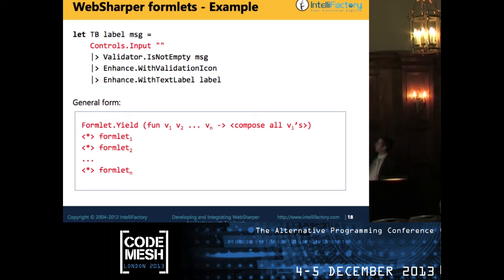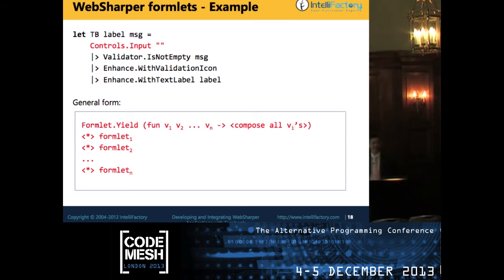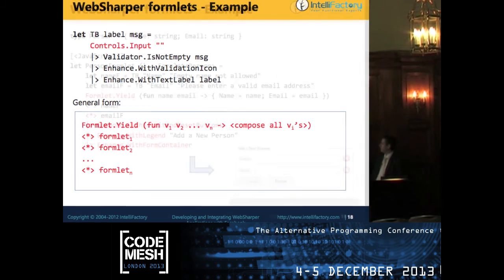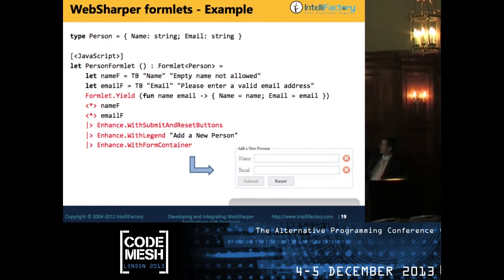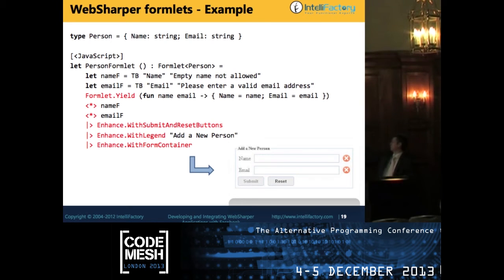Here's an example: a function called TB takes two arguments and gives you a text box with basic validation, a label, and an error message if validation fails. The general form for composing formlets uses an applicative operator — you take N formlets, compose them, and the combined value can be returned as the result. You can validate on emptiness, email address format, integer type, and so on. Combining formlets with a submit/reset button and legend box gives you a complete web form with client-side validation.